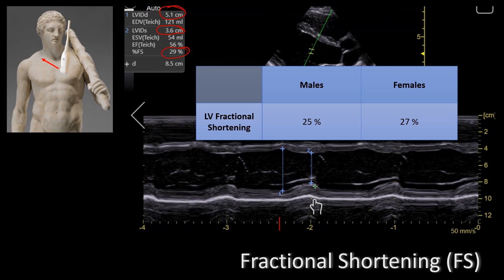Also note that this machine also calculates the ejection fraction by using the Teichholz method. The Teichholz method uses the internal diameter to calculate volume. However, the Teichholz method is not the best way to calculate ejection fraction since it makes a lot of geometric assumptions about the left ventricle, and the only variable you're actually putting into the equation is the diameter, so there's a lot of sources of error if you're using it simply to calculate ejection fraction.